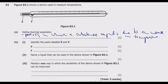Question B, part 1: identify the parts labeled E and F. We are required to identify these two parts, so it's important that you are able to label all parts of the thermometer. If you look at F, F is basically the constriction. The purpose of this constriction is to prevent the backflow of the liquid in the thermometer. Then we have E, which is the mercury — the liquid used in this thermometer.